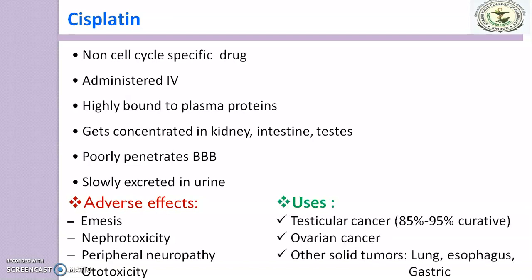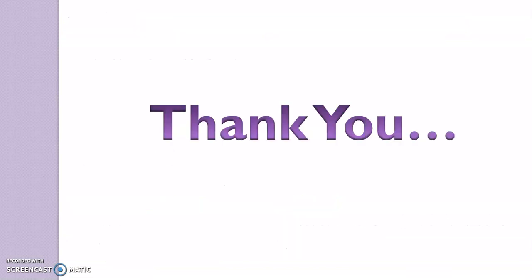Uses of Cisplatin: it can be used in testicular cancer and is curative in around 85% to 95% of cases. It can also be used in ovarian cancer and other solid tumours such as lung, esophagus, and gastric cancers. This concludes the Mechanism of Action, Adverse Effects, and Uses of Cisplatin.